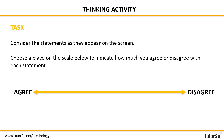Let's start with a thinking activity. On the screen and on your worksheet you can see there's an arrow across the screen and we're on a continuum of agree to disagree. For this task, you're going to be shown a series of statements on the screen and you'll have 60 seconds to think about them or discuss them with somebody else, and your job is to choose a place on the agree to disagree scale where you would sit.